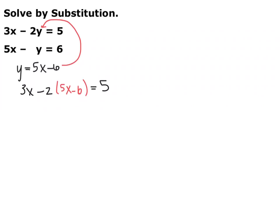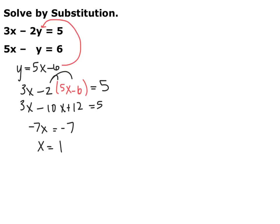When you plug it in for y, you get 3x minus 2 times the quantity 5x minus 6, is equal to 5. Go ahead and pause the video and solve for x. When you distribute and simplify, you get x is equal to 1.